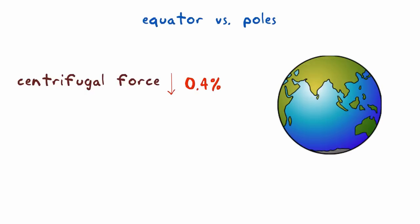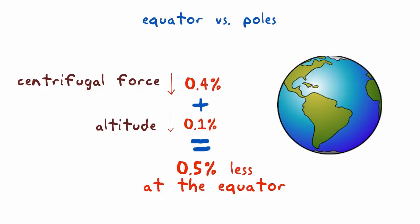The Earth's spin also causes the planet to bulge. So at the equator, you're about 21 kilometers further from the Earth's center of gravity and weigh about 0.1% less. Overall, you'd weigh around half a percent less. That would be one pound less if your weight is 200 pounds.